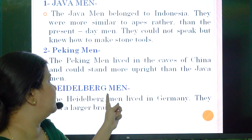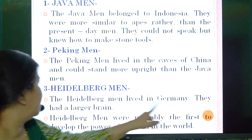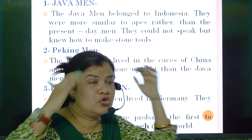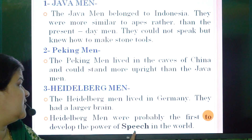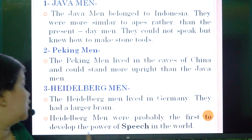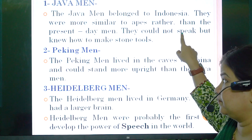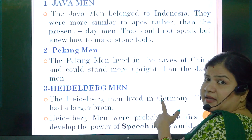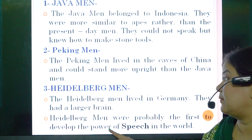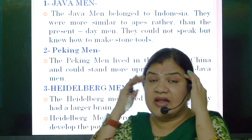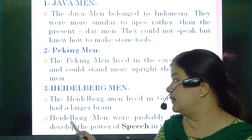Now, the Heidelberg men. The Heidelberg men lived in Germany. They had a larger brain and could use more of their senses. Underline this: the Heidelberg men were probably the first to develop the power of speech in the world. The Java men could not speak, but the Heidelberg men — who lived in Germany — were probably the first to develop speech.